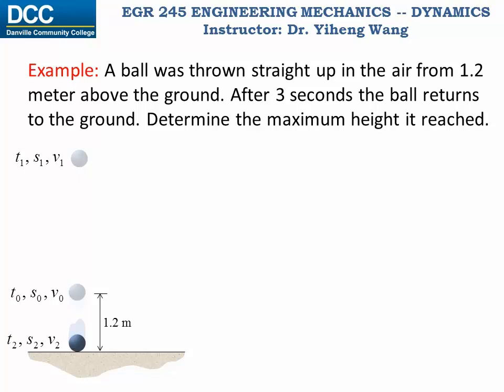Although you might think obviously the initial position of the ball is 1.2 meters, please be careful, because position has to be described within an established coordinate system. Therefore, only after we set the origin point O to be on the ground can we say that the initial position s₀ is 1.2 meters.